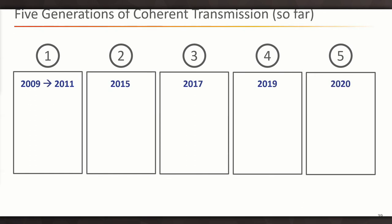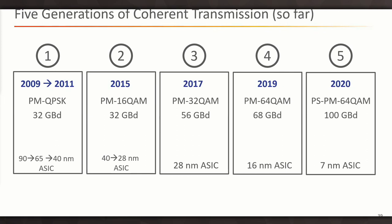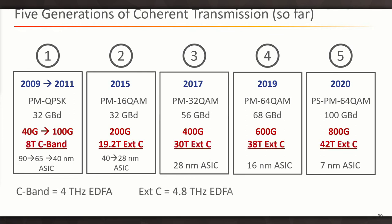Because what happened from 2010 onwards is we start to have coherent technology coming along and we now have five generations of coherent technology. These are the dates of their commercial introduction. And these are some of the characteristics of each generation. So we see as we progress through the generations, the modulation constellations become more complex from QPSK right through to 64 QAM. And then we have probabilistically shaped 64 QAM in the latest generation. We have increasing baud rates. These are the rate at which you send modulation symbols.